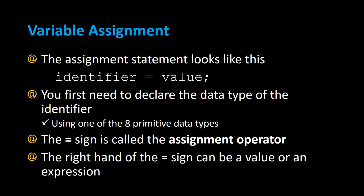So what we're doing here is assigning some identifier to a value and ending that with a semicolon. You first need to declare the data type of the identifier using one of the eight primitive Java data types — there's a separate video that describes all eight. The equal sign is called the assignment operator, and the right-hand side can be a value or an expression. The right-hand side gets evaluated first, and then it gets assigned to whatever's on the left-hand side.